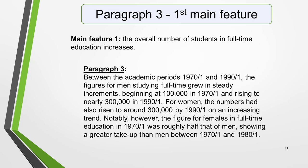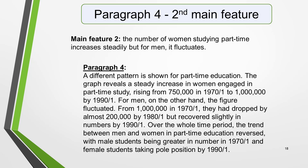So here is our first main feature again: the overall number of students in full-time education increases. This is an example of what you could write: between the academic periods 1970–71 and 1990–91, the figures for men studying full-time grew in steady increments, beginning at 100,000 in 1970–71 and rising to nearly 300,000 in 1990–91. For women, the numbers had also risen to around 300,000 by 1990–91, on an increasing trend. Notably, however, the figure for females in full-time education in 1970–71 was roughly half that of men, showing a greater take-up than men between 1970–71 and 1980–81.